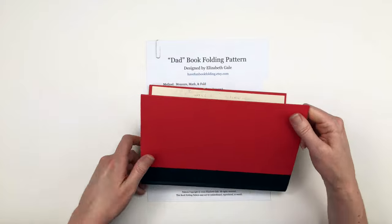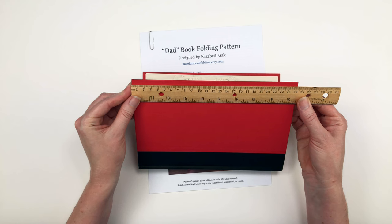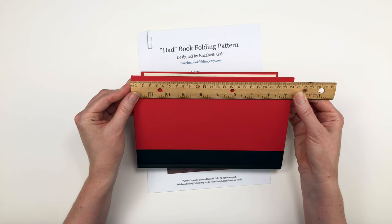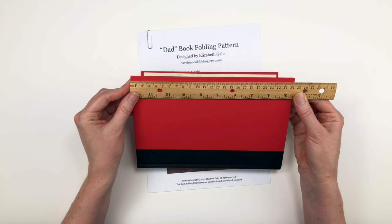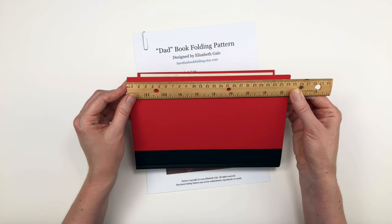You can use a book that is taller than 22 centimeters. For example, this book that I folded is a little over 24 centimeters. So if your book is over 22 centimeters tall, that's fine. The dad design will still look good.